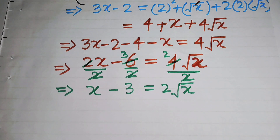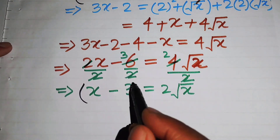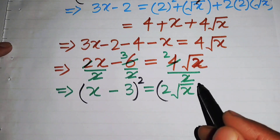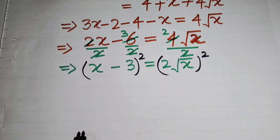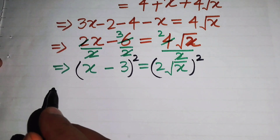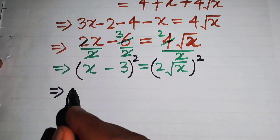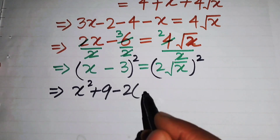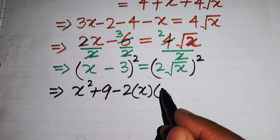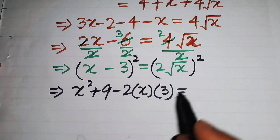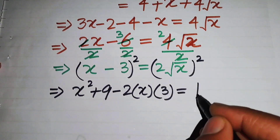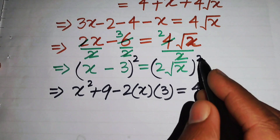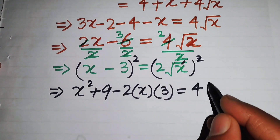To eliminate the remaining square root term, we square both sides again. Opening the square identity on the left gives x squared plus 9 minus 2 times x times 3. On the right, 2 squared is 4, and the square and square root cancel, giving plus x.